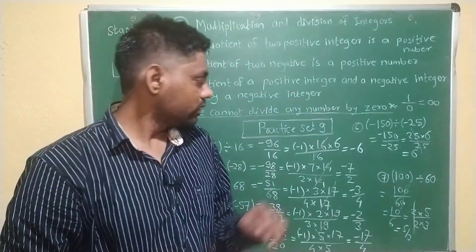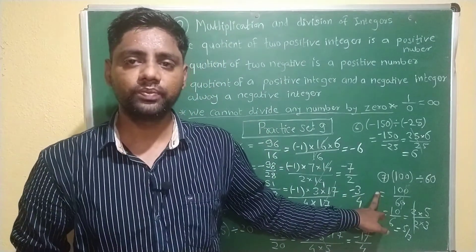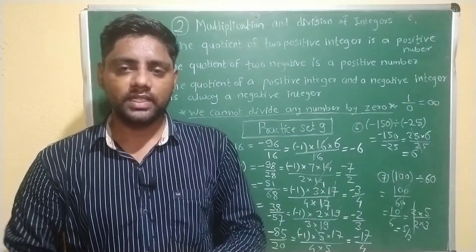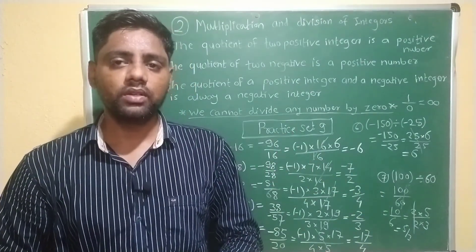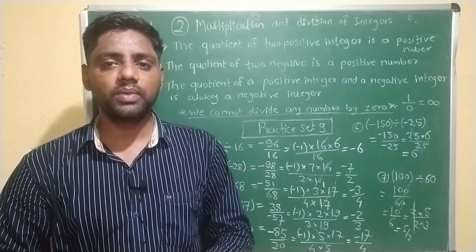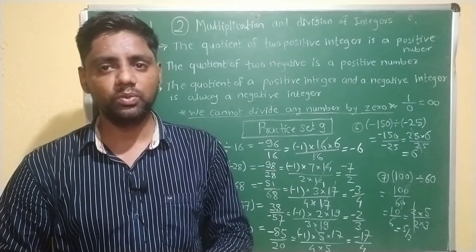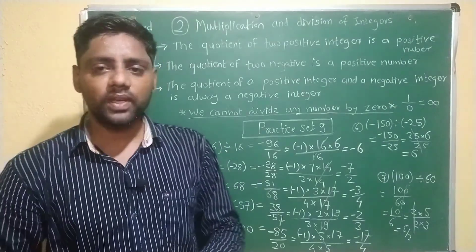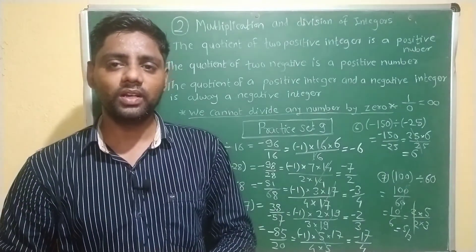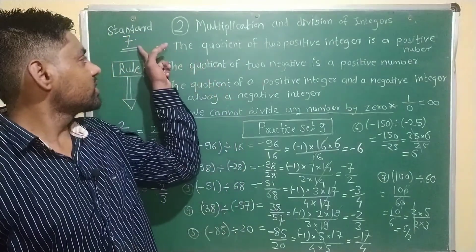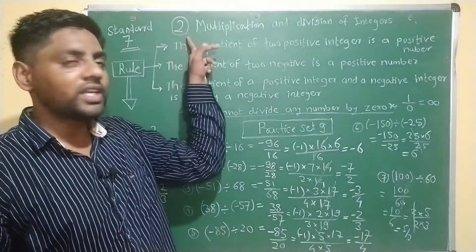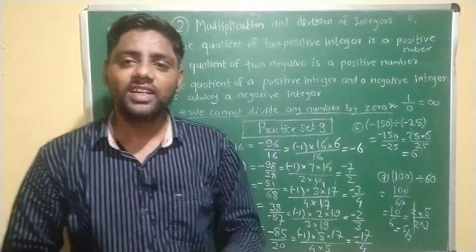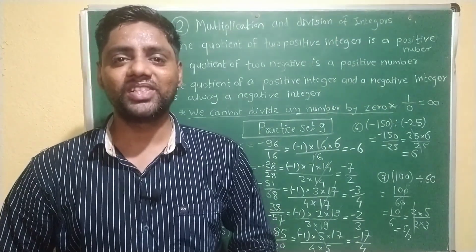Here we solved 7 examples. In practice set 9, 10 examples are given, so you can solve the remaining 3 examples at home — practice them. In this way we complete our seventh standard second chapter: multiplication and division of integers. Thank you very much.